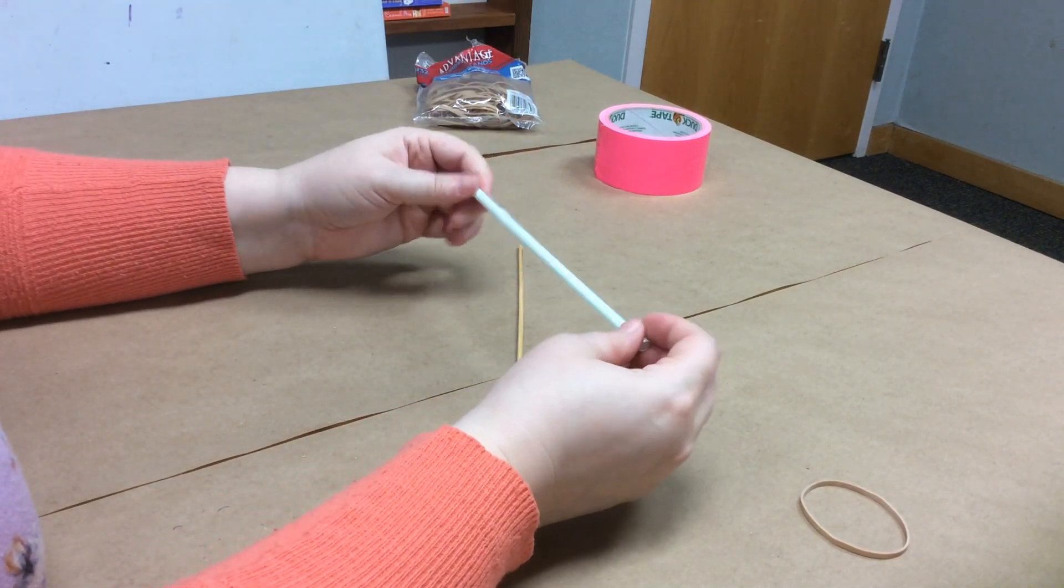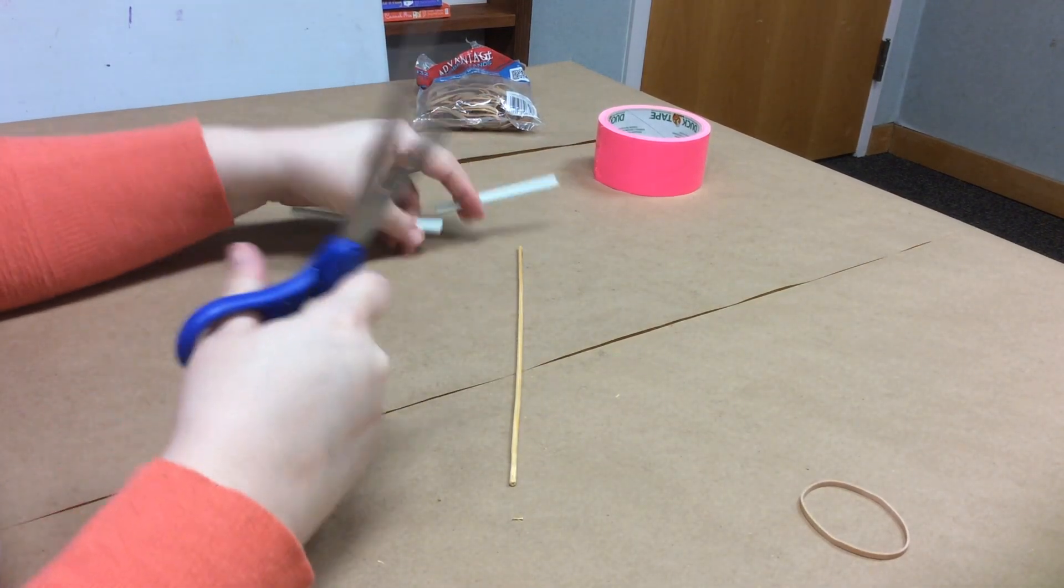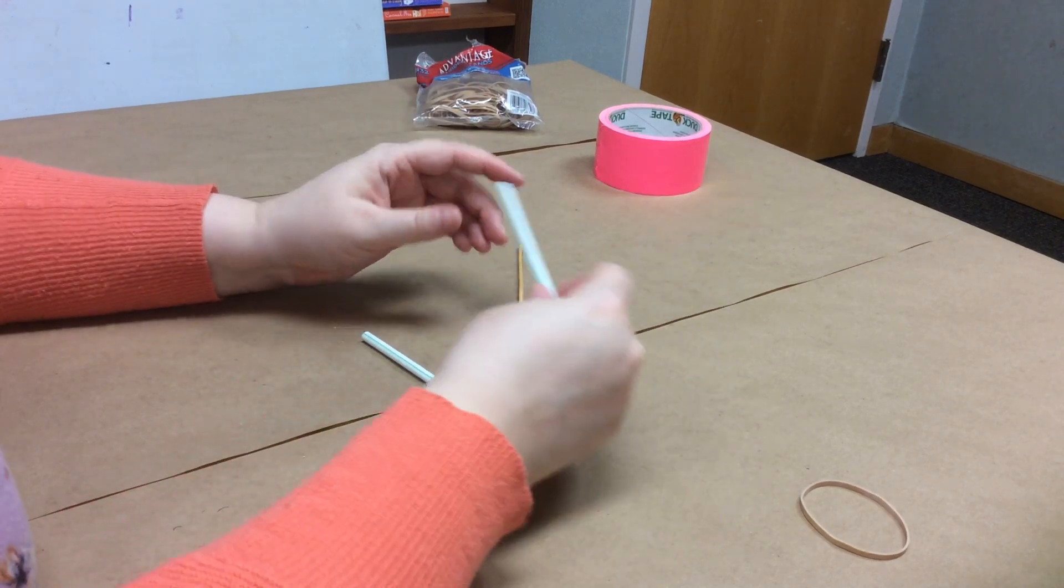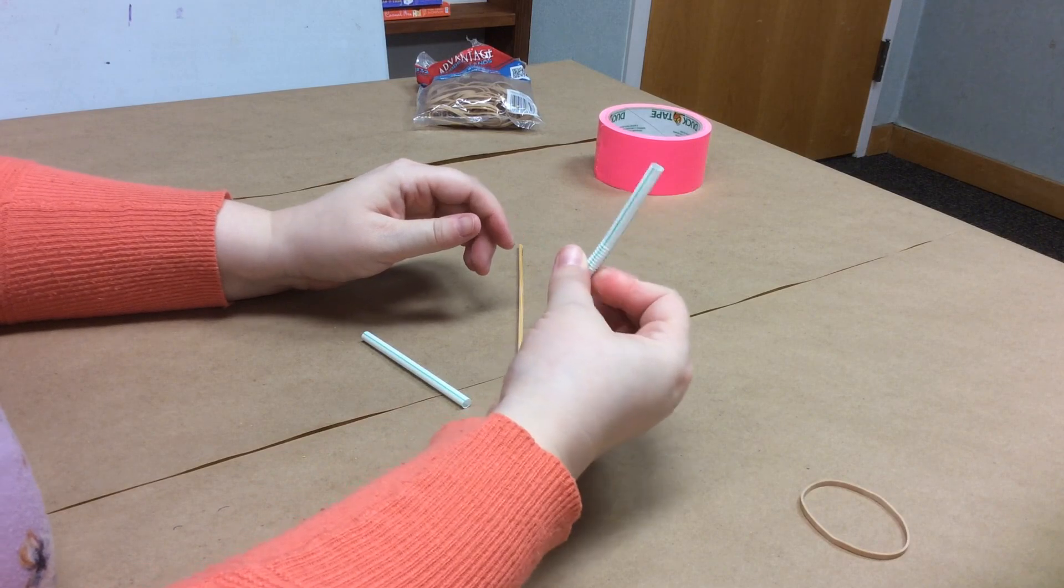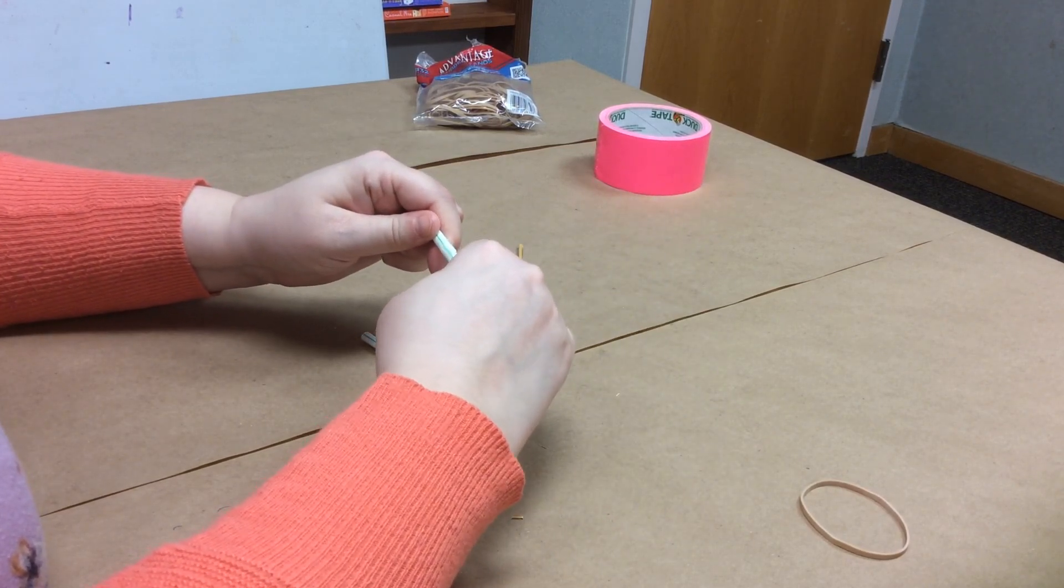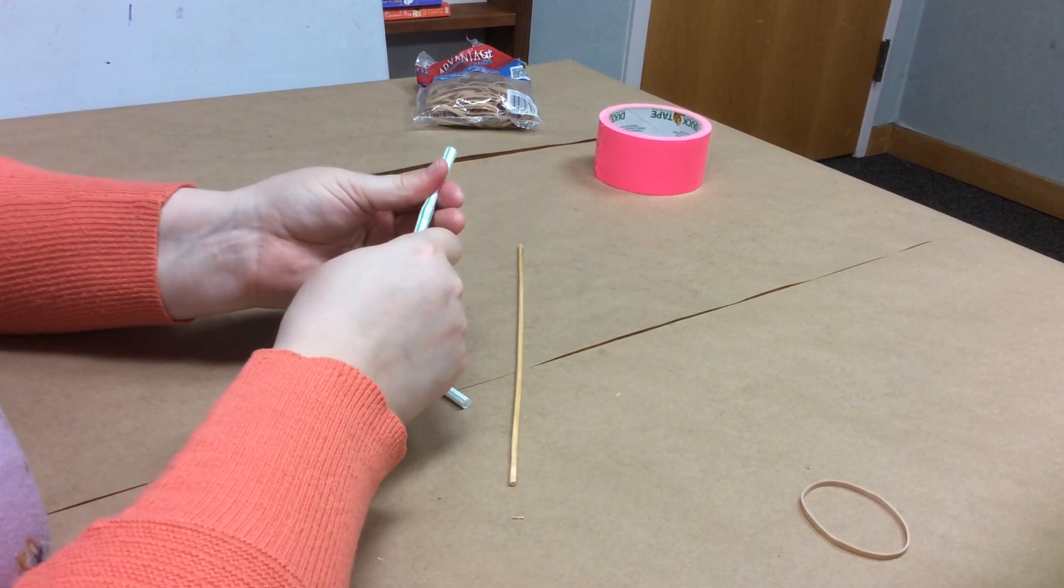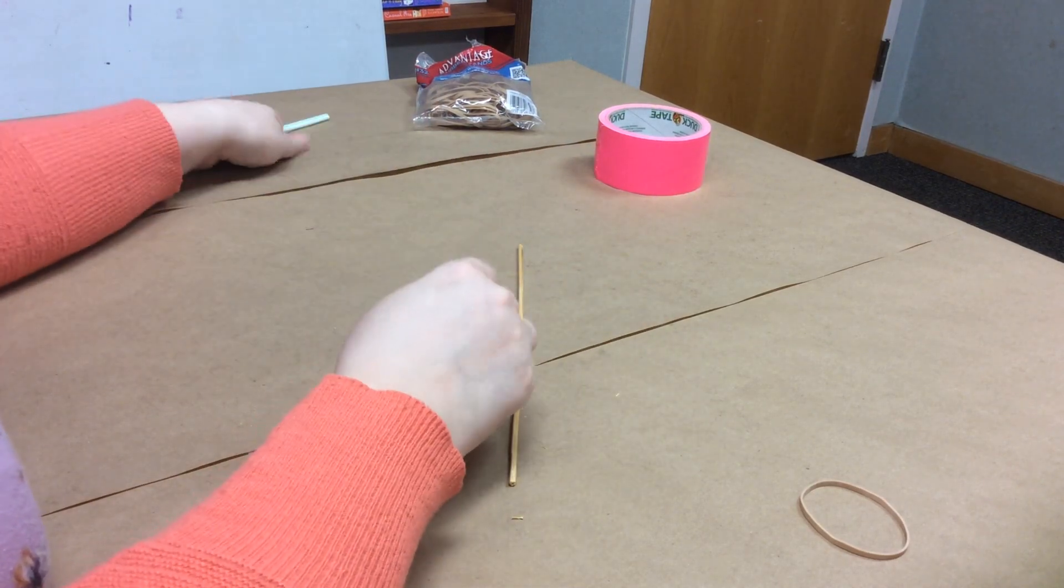So now you're going to take your straw and you're going to cut it in half. And you can discard the other half. You can keep it. You can make a second toy. I don't know how the bendy part would really affect it. But that's another thing you can play with as a STEM activity. You can experiment with a design and maybe use the bendy part of the straw. Maybe that would make a difference if it's not bent or if it's stretched out. That's something to play around with.